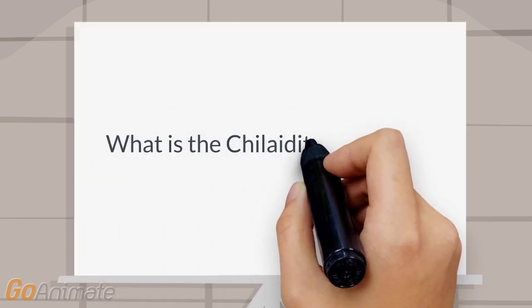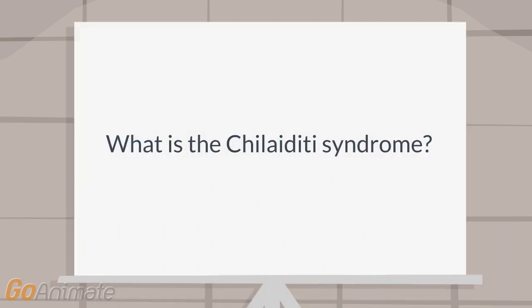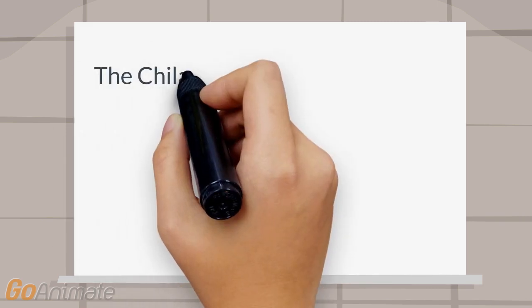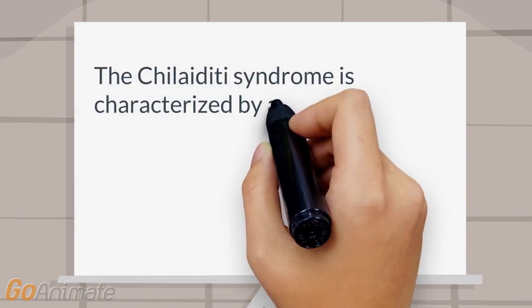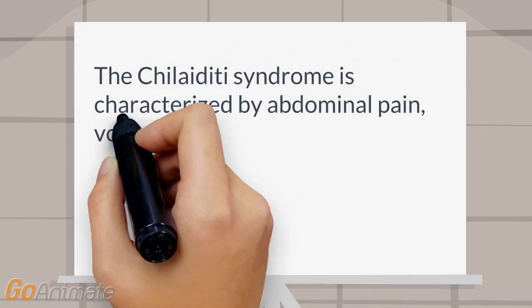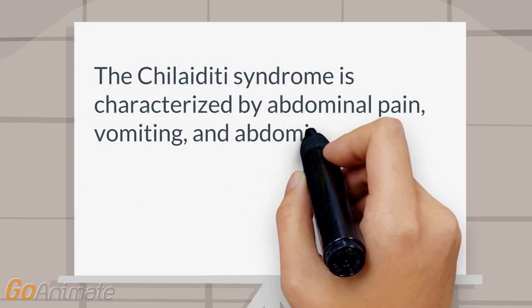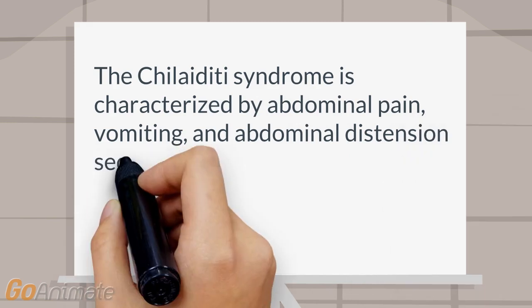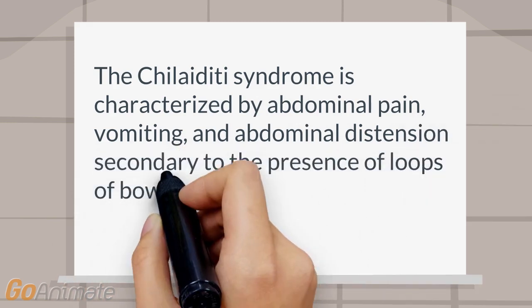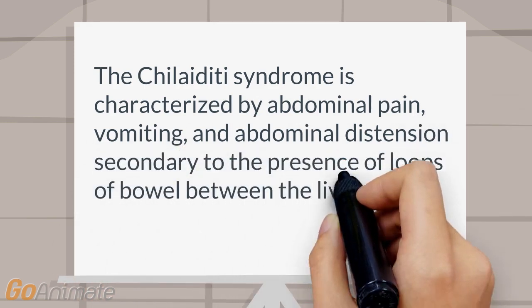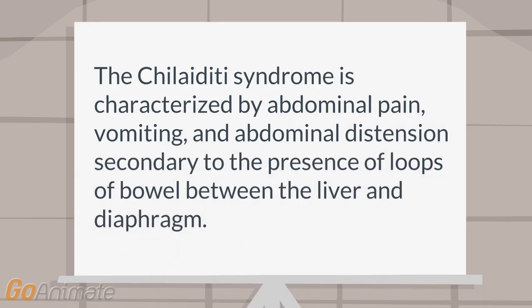What is the Chiliditi syndrome? The Chiliditi syndrome is characterized by abdominal pain, vomiting, and abdominal distention secondary to the presence of loops of bowel between the liver and diaphragm.